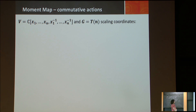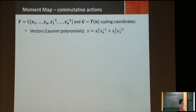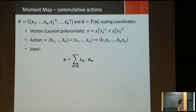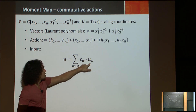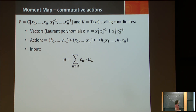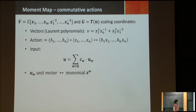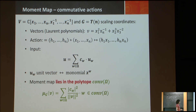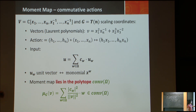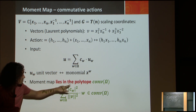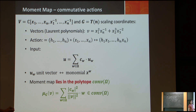Let's see what this moment map looks like for our commutative action. Take the space of Laurent polynomials and the group action by scaling coordinates. Here I index every monomial by the vector w, so u_w is the basis element corresponding to the monomial x^w. In this basis, if we compute the moment map — the gradient — we get a specific expression.